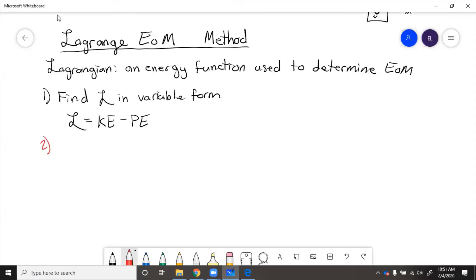Then the next step is take partial derivatives with respect to each independent variable. So this would be del L del theta dot and del L del theta for angular motion. Or if you are using linear, del L del S dot and del L del S.